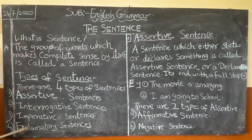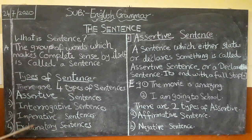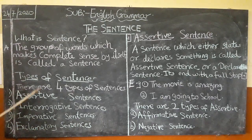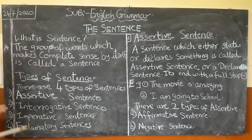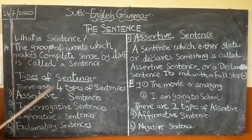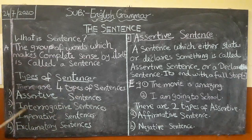You have to remember that these four types of sentences exist. We will now learn each type one by one, with definitions and examples. Please pay attention. First, we are going to learn about the assertive sentence.